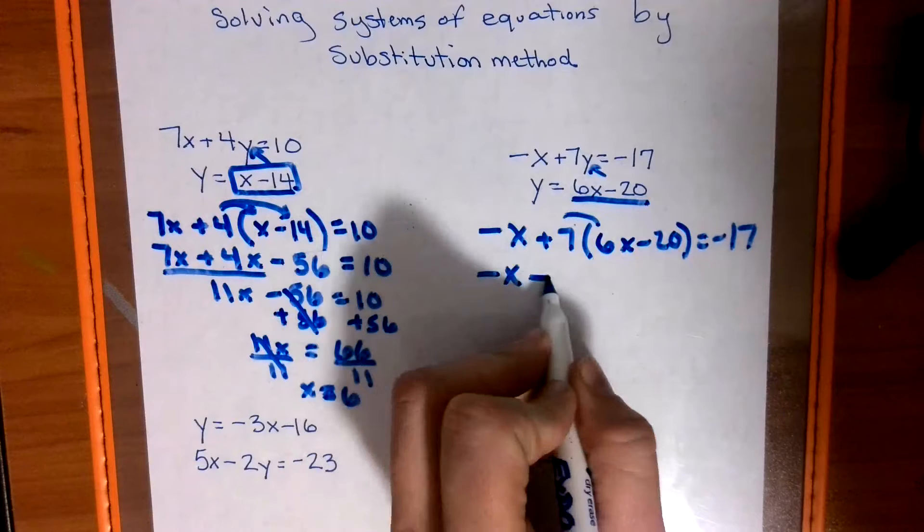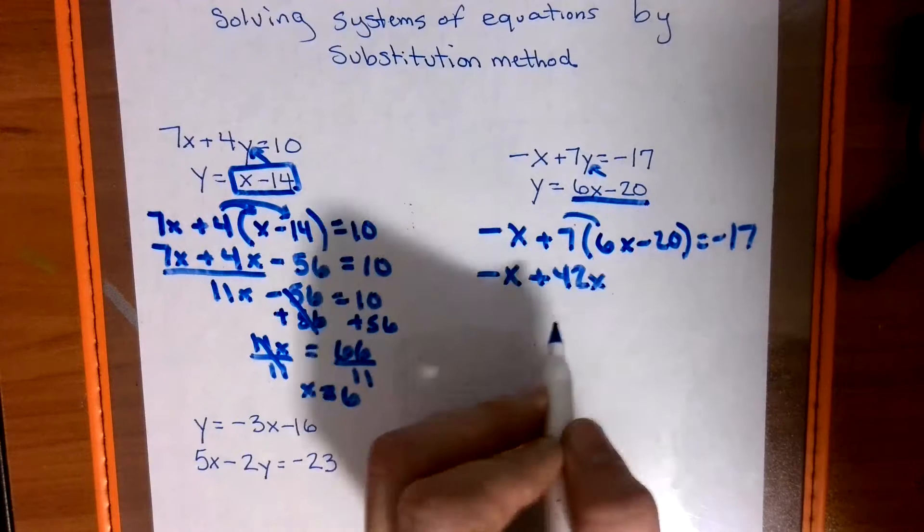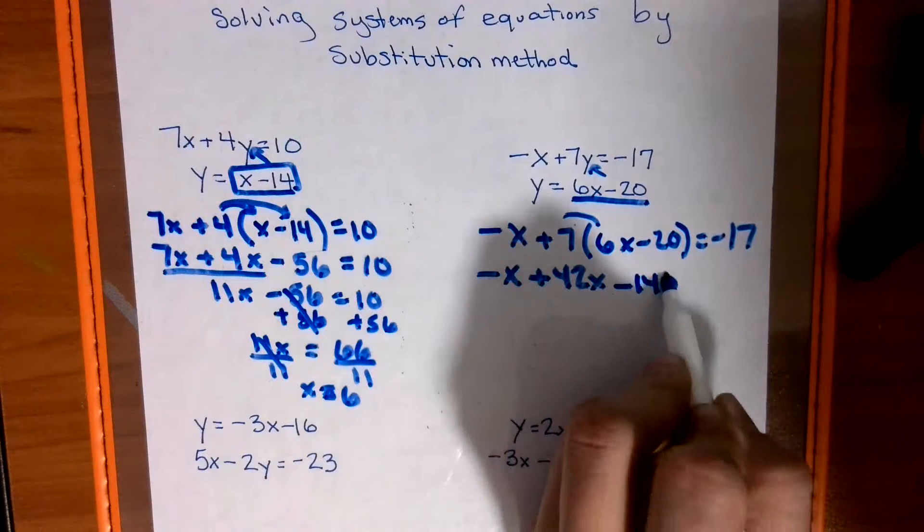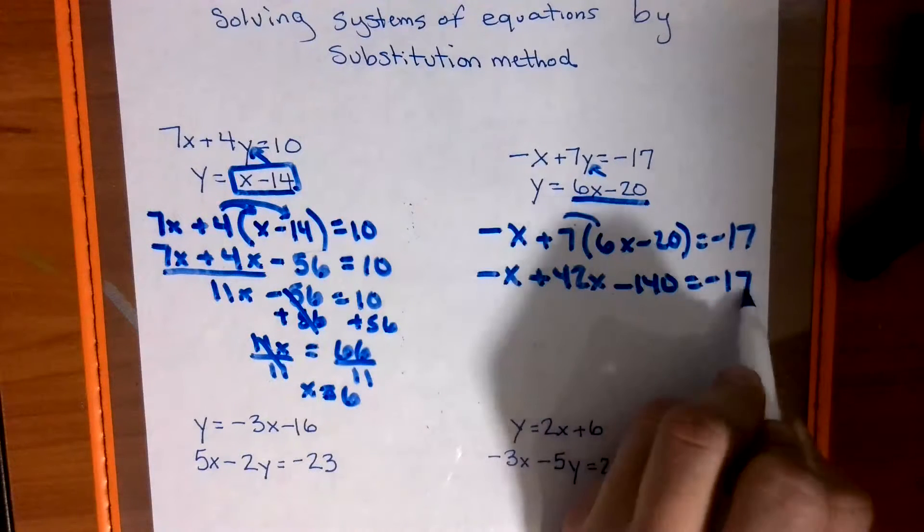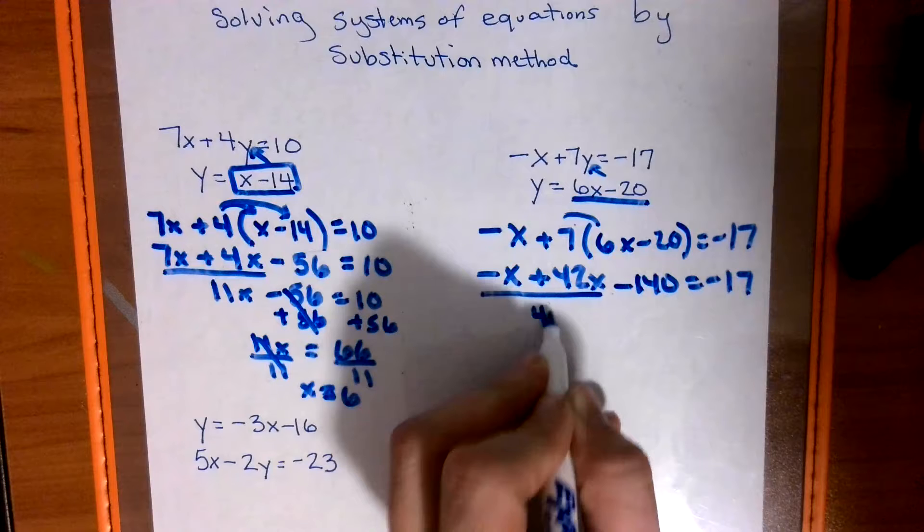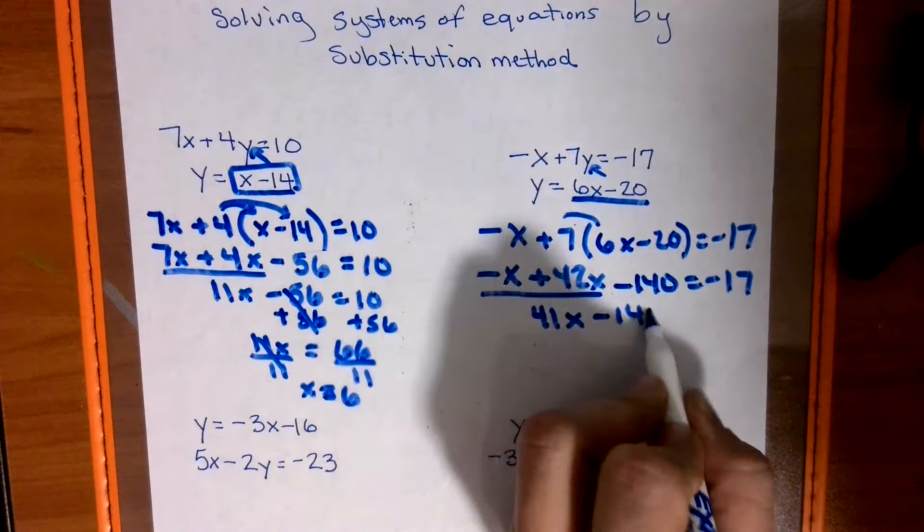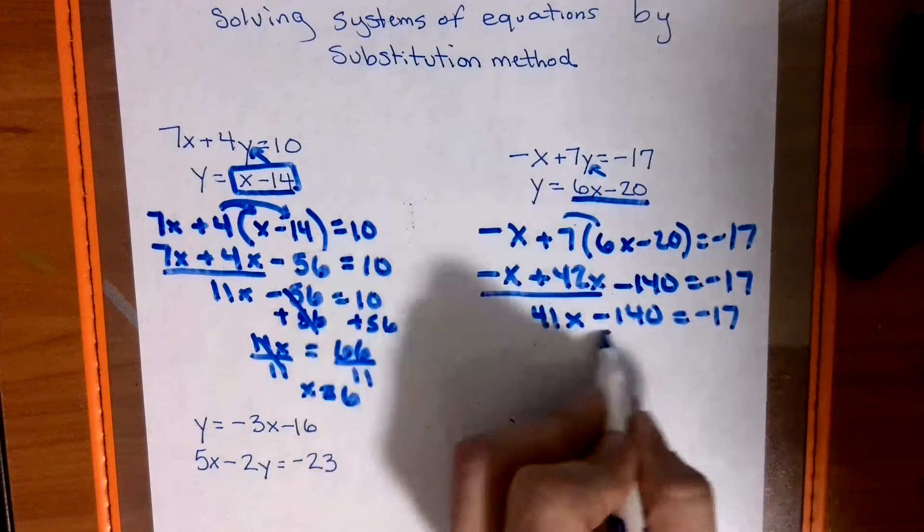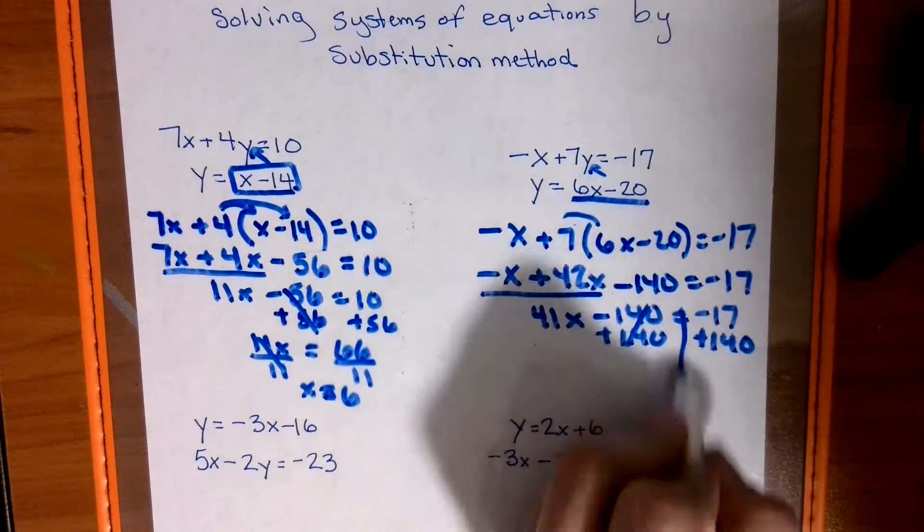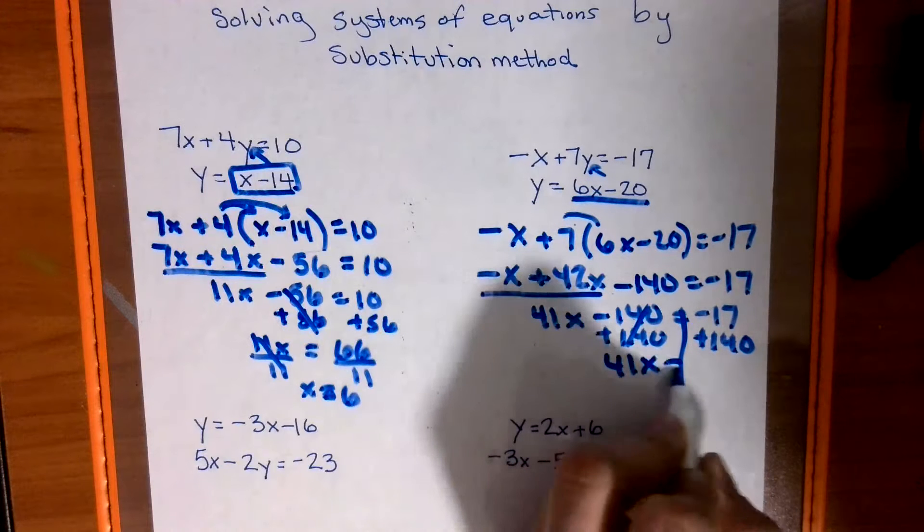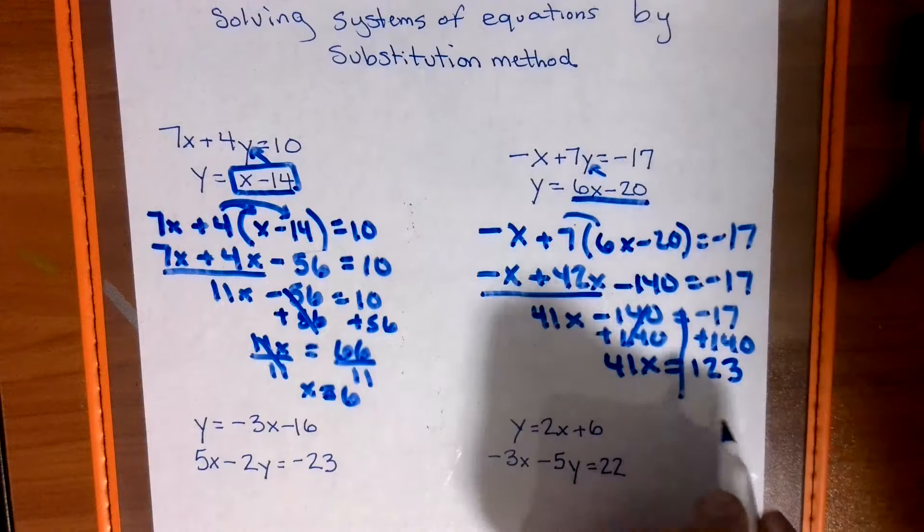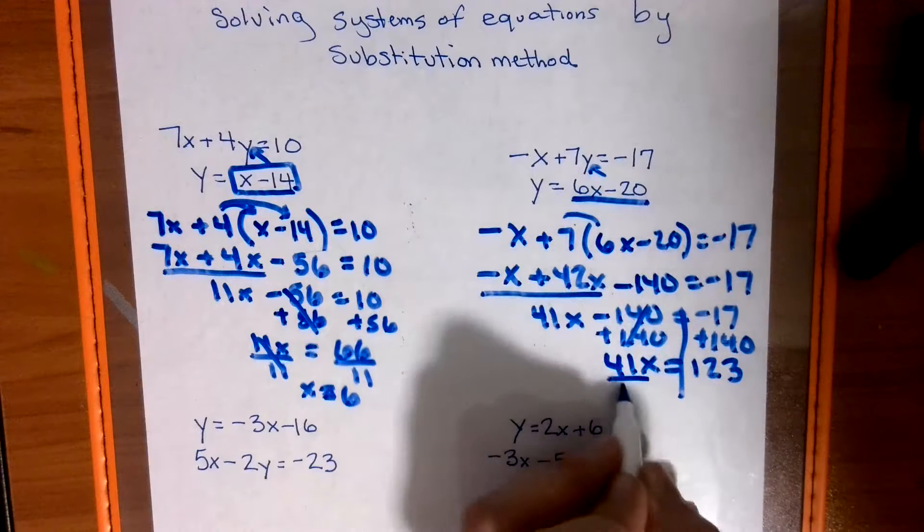So I've got negative x plus 42x minus 140 equals negative 17. These two can go together for a 41x minus 140 equals negative 17. Bringing the 140 over.